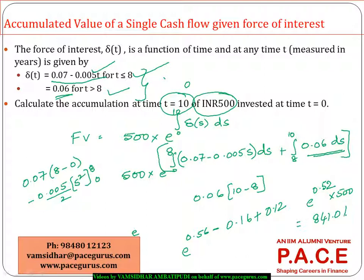500 right now, where the interest rates follow this kind of a pattern—for the first 8 years they follow this pattern and for anything beyond 8 years it follows this pattern—if I want to find out what would be the worth of my investment of 500 bucks at the end of 10 years, I can use this integral form.